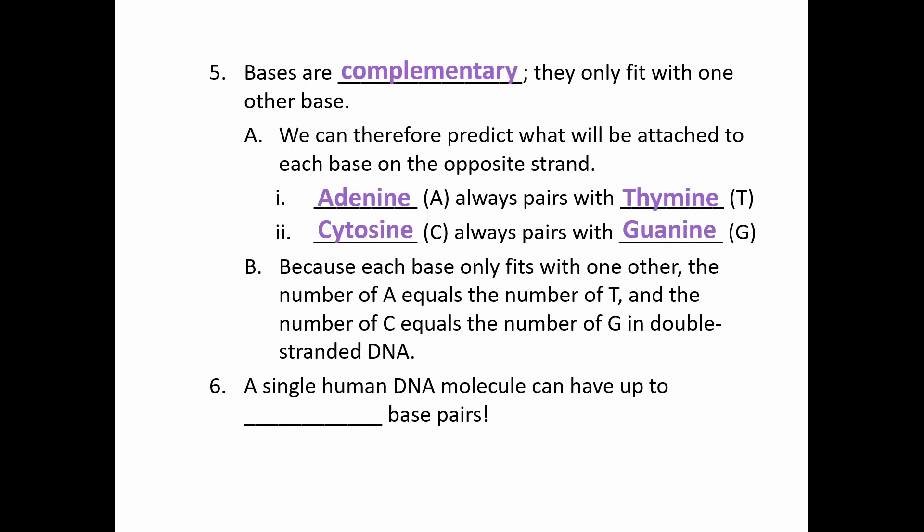If we only have one of the two strands forming DNA, we know exactly what the other strand is going to be. Now 50 or 100 bases does sound like a lot. However, if we look at a human DNA molecule, we're looking at about 200 million base pairs. So when we're looking at these molecules, these guys are massive.